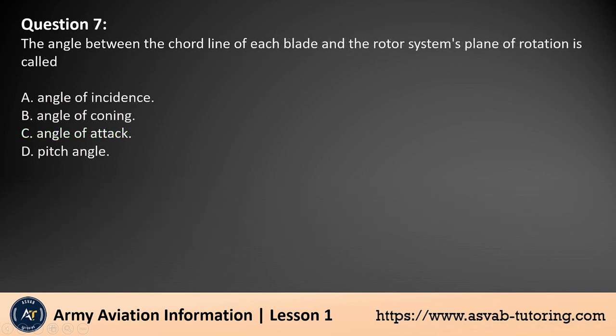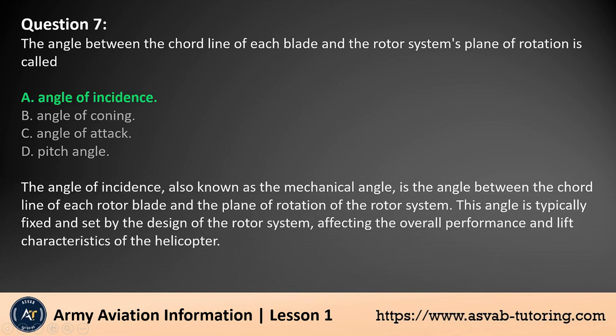Question 7. The angle between the cord line of each blade and the rotor system's plane of rotation is called: A. Angle of incidence. B. Angle of coning. C. Angle of attack. D. Pitch angle. The answer is A.